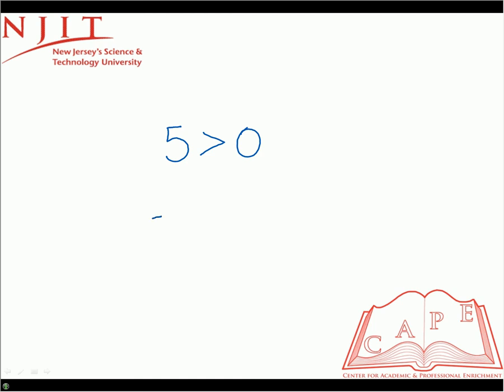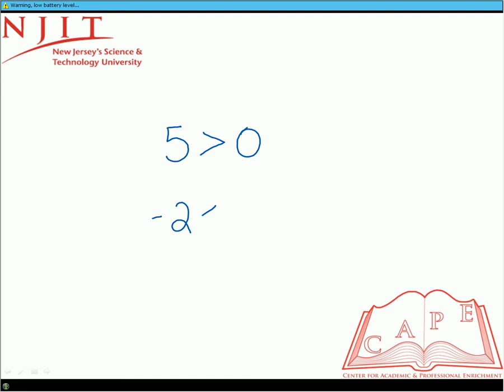Here we have the symbol pointing to the left, which means the number on the left has to be smaller than the number on the right. So the statement says negative two is smaller than negative three, which is false. If we look on the number line, negative numbers go in the opposite direction: negative three, negative two, negative one, zero. Negative two is to the right of negative three, which means negative two should be larger than negative three. So this inequality statement is false.